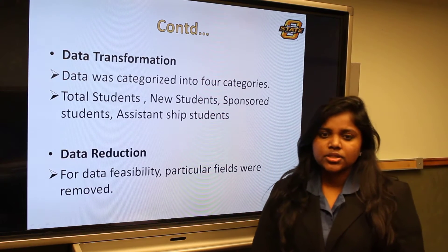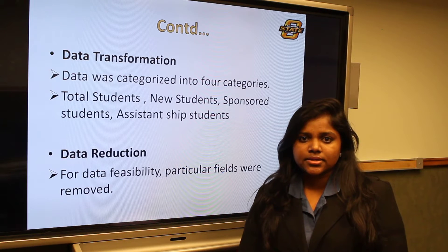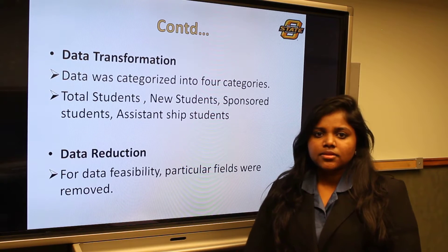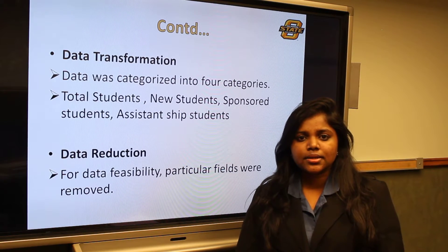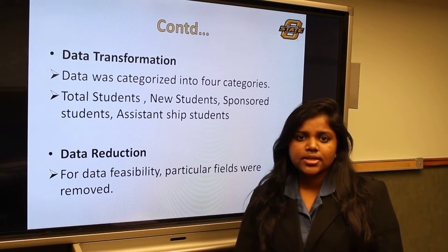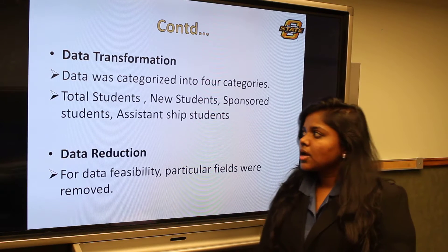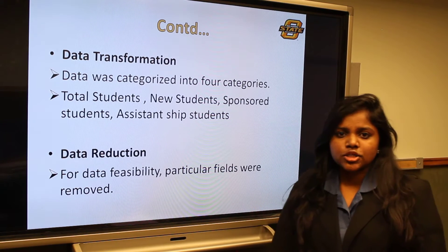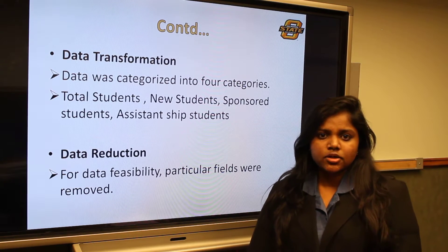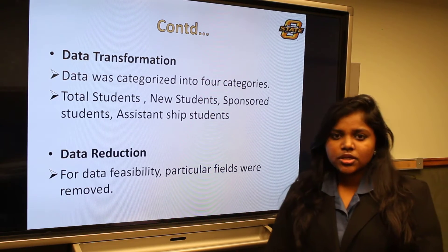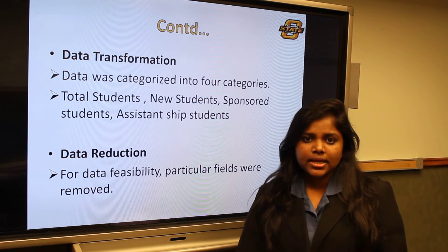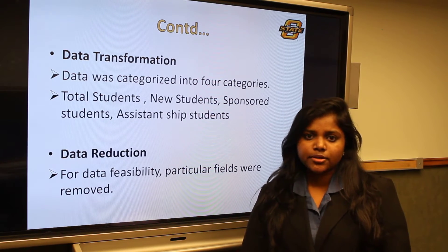Going further to data transformation, it involved four categories: total students, new students, assistantships, and sponsorships. Total students contains the total number of students enrolled in that particular term, and new students are those who attended for that particular term. Assistantship and sponsorship students are the student data for those given assistantship or sponsorship. For data reduction, the data was reduced further for feasibility, and a few attributes like date of birth and English learning were removed.